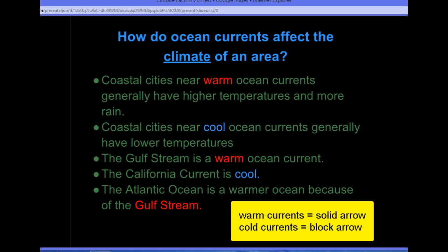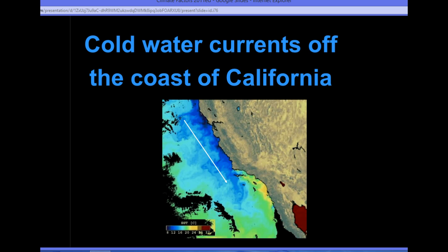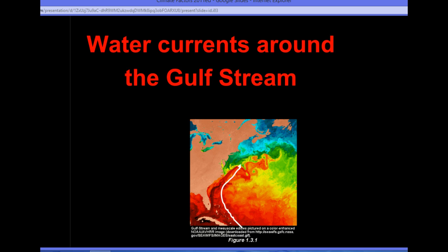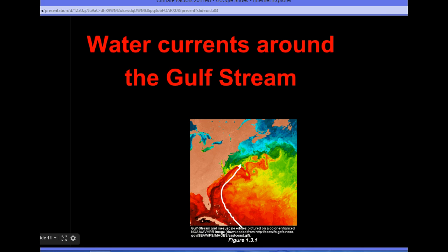If you go to the other side of the United States — the California west coast side — it is a cool ocean current. This actually leads the Atlantic Ocean to be a warmer ocean because of the Gulf Stream ocean current that affects it, while cold water currents are off the coast of California. These two pictures demonstrate temperature changes in the ocean — represented by the blue color off of California showing sea surface temperature. Looking at the Gulf Stream surrounded by Florida and the Atlantic Ocean, you can see it is a warm ocean current that comes up and goes east-northeast.